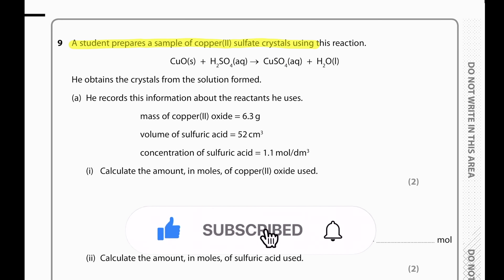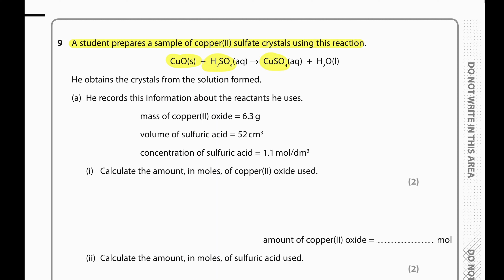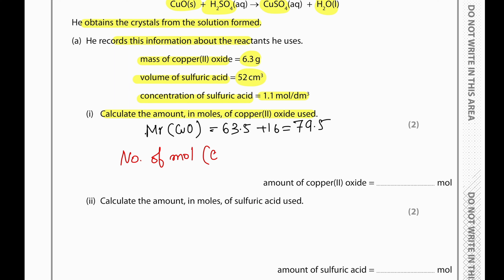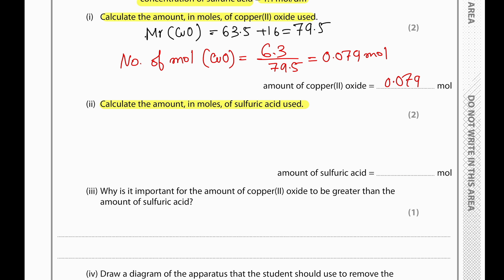Copper oxide reacts with sulfuric acid to produce copper sulfate and water. Mass of copper oxide used: 6.3 g; MR of copper oxide = 63.5 + 16 = 79.5; moles of copper oxide = 6.3 ÷ 79.5 = 0.079 mol. Volume of sulfuric acid = 52 cm³ at 1.1 mol/dm³; moles of H2SO4 = (52 ÷ 1000) × 1.1 = 0.057 mol.